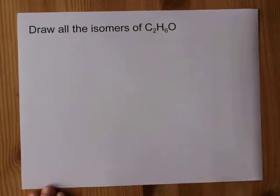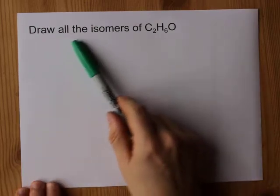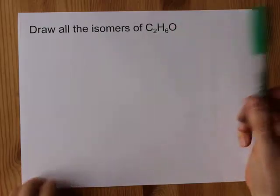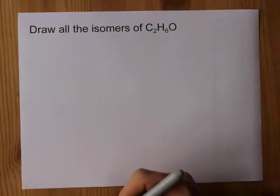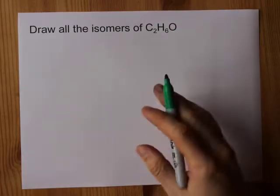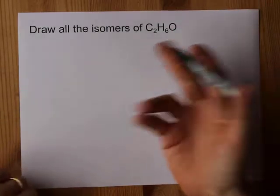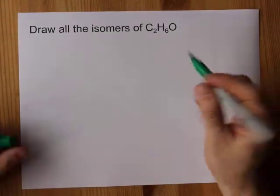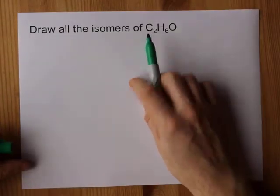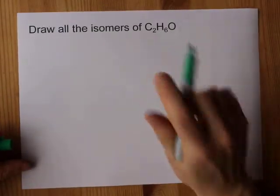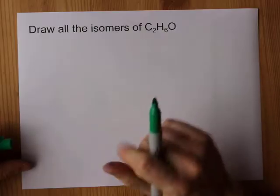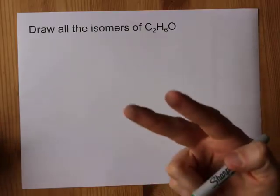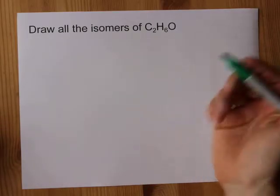A common question is to draw all of the isomers of C2H6O. This is actually easier than it looks because you're limited by what can bond to how many things. Carbon needs four bonds each, hydrogen needs one bond each, and oxygen is happiest with exactly two bonds.